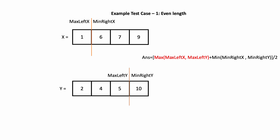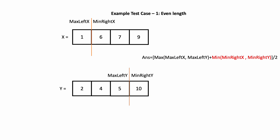Let's talk about how to calculate the median. When the sum of the lengths of the input arrays is even, the median is calculated as follows: the max of max_left_x and max_left_y is 5, and the min of min_right_x and min_right_y is 6. So the median is (5 + 6) / 2, which equals 5.5.